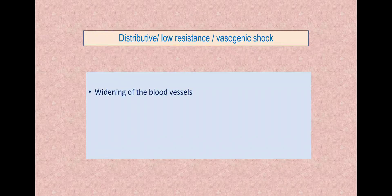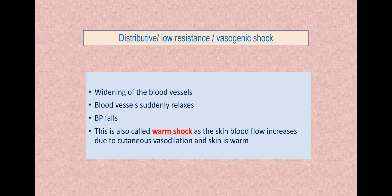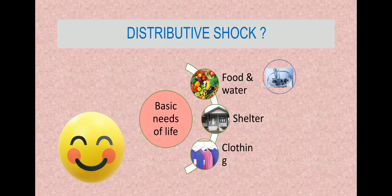So either it is widening of the lumen of the blood vessels or the blood vessels undergo massive sudden vasodilatation and this type results in reduction of venous return, reduction of blood pressure, reduction of stroke volume, reduced cardiac output and impaired tissue perfusion. Also known as warm shock because when you touch the body of the person it will be warm because the skin blood flow increases due to cutaneous vasodilatation and the skin feels warm.